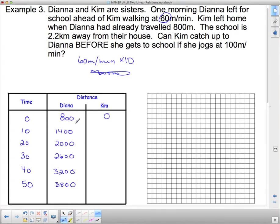So what I filled in here, I'm going up by 600 meters every time. Because every 10 minute intervals of time, Diana walks 600 meters. Now, what about Kim? She's jogging at 100 meters per minute. So if she's going 100 meters per minute, then in 10 minutes, she's going to go 1,000 meters. So she's going to go 1,000 meters for the first 10 minutes and 2,000 for the next.